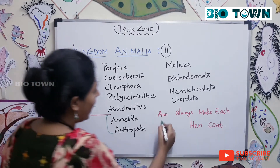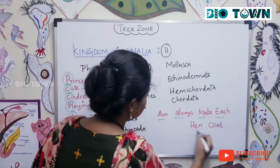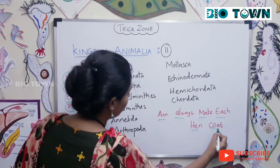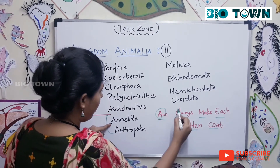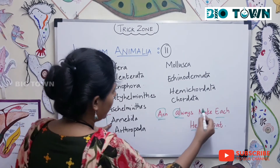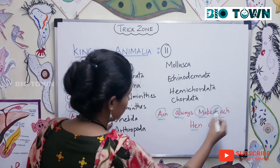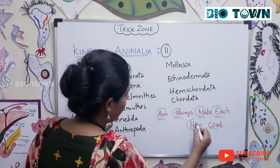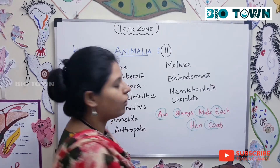And now: 'Ann always make each hen coat' — covering Annelida, Arthropoda, Mollusca, Echinodermata, Hemichordata, and Chordata.